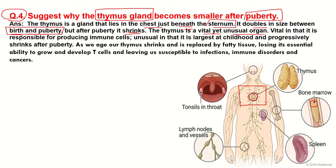The thymus is a vital yet unusual organ — vital because it is responsible for producing immune cells, and unusual in that it is largest during childhood and progressively shrinks after puberty. As we age, our thymus shrinks and is replaced by fatty tissue, losing its essential ability to grow and develop T cells, leaving us more susceptible to infections, immune disorders, and cancer.